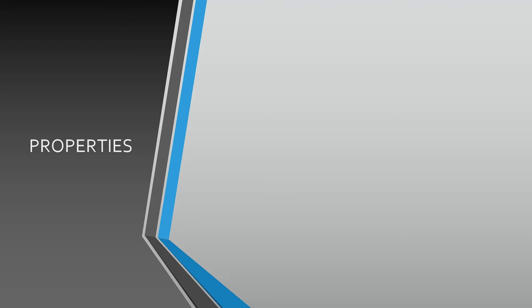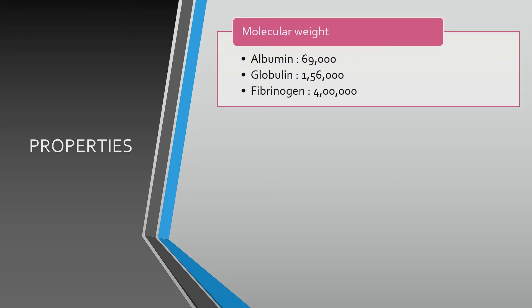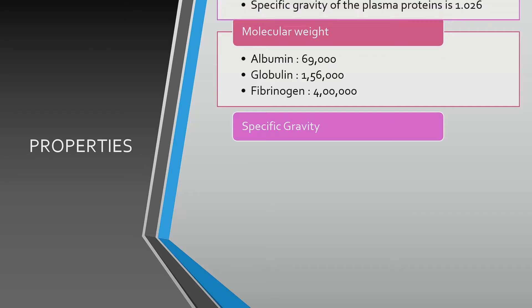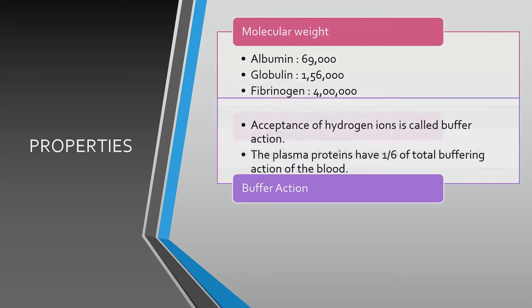Now comes the properties of plasma proteins. The molecular weight of albumin is 69,000 Dalton, the molecular weight of globulin is 1,56,000 Dalton, and the molecular weight of fibrinogen is 4,000 Dalton. The specific gravity of the plasma proteins is 1.026. The plasma proteins have one sixth of the total buffering action of the blood.